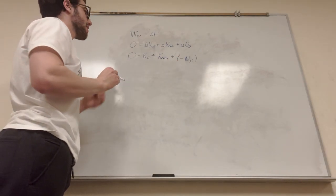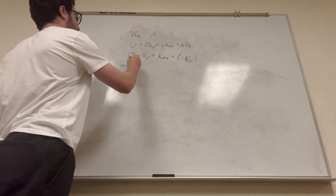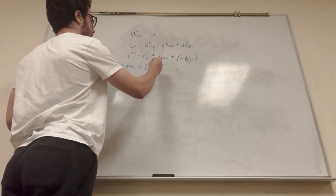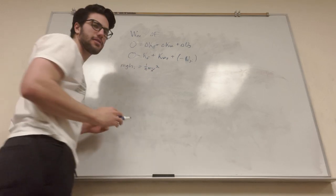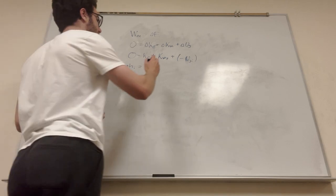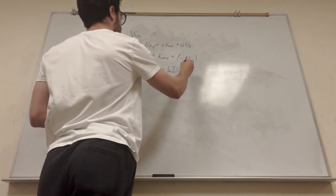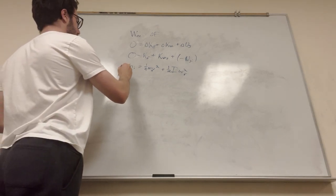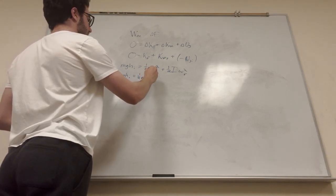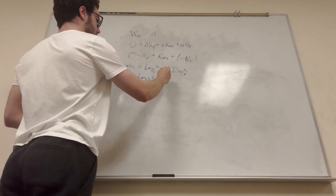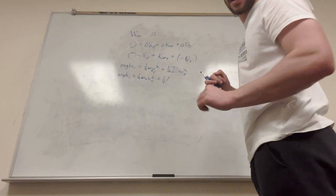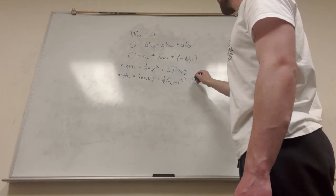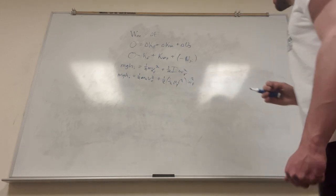We can move the U_g initial over to make it positive: mass times gravity times height initial equals our kinetic energy terms. Expanding: this is one-half mass times velocity squared — that's the mass of the block — plus one-half I times omega squared final, which is of the wheel. For a solid disk, the moment of inertia is one-half mass times radius squared, so it becomes one-half times (one-half times mass of the pulley times radius squared) times omega squared final.